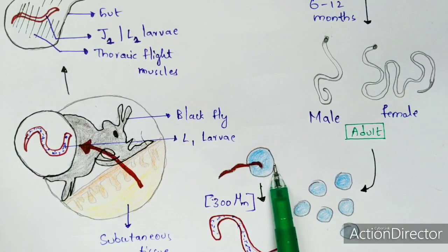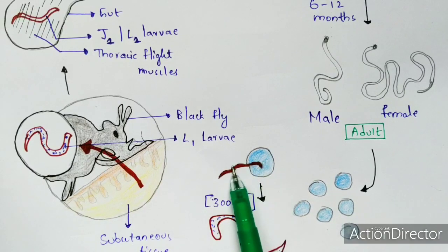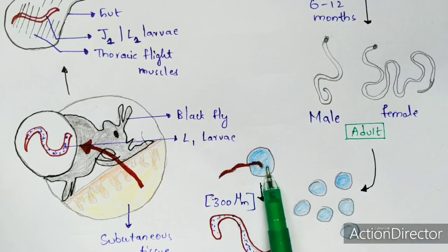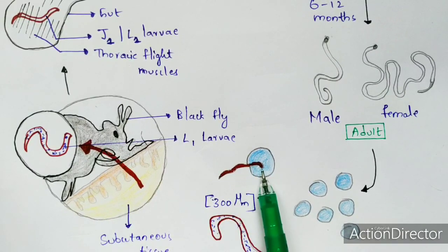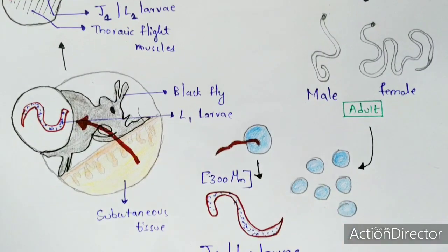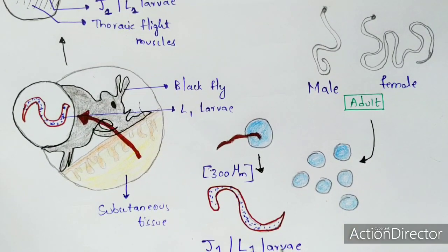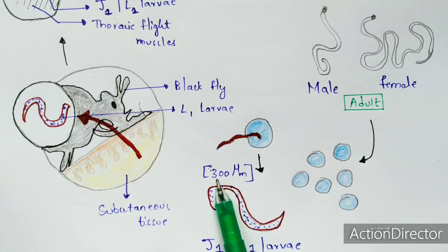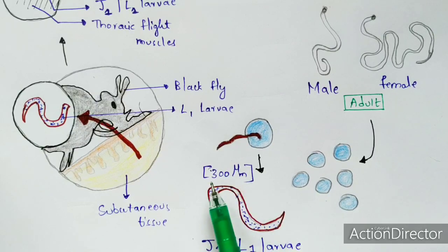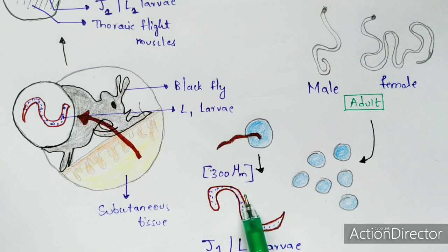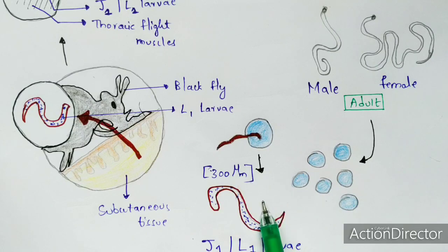When hatching of the eggs occurs, larvae are released from the eggs. These larvae are called J1 or L1 larvae, and their size ranges up to 300 micrometers in length.